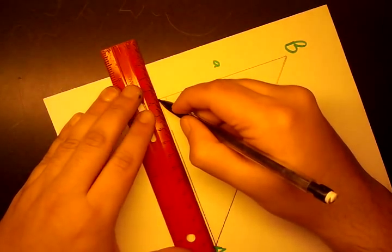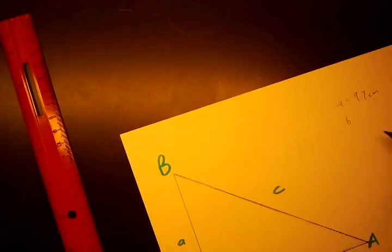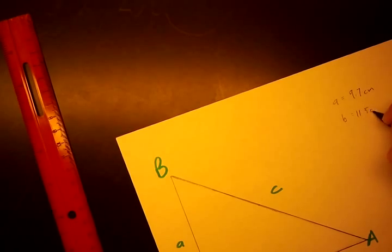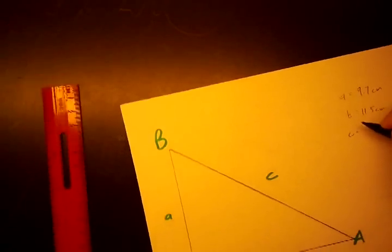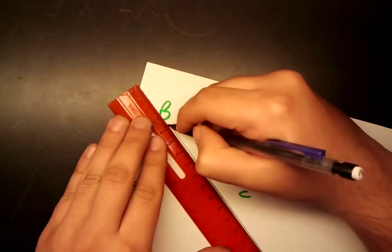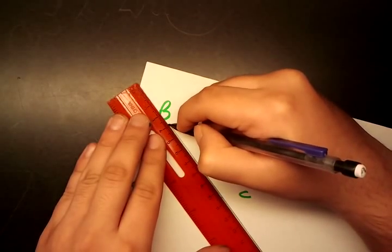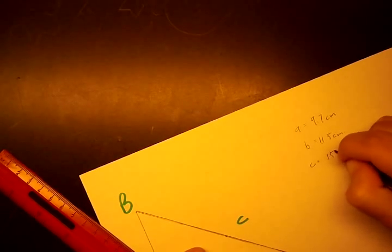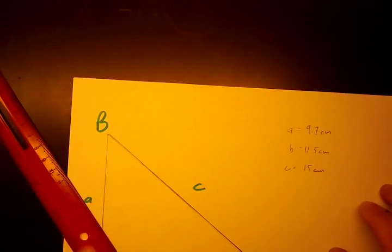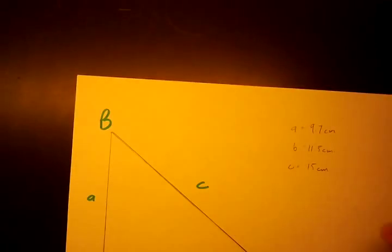B comes out to be 11.5, and C turns out to be 15. So now we have our side lengths.